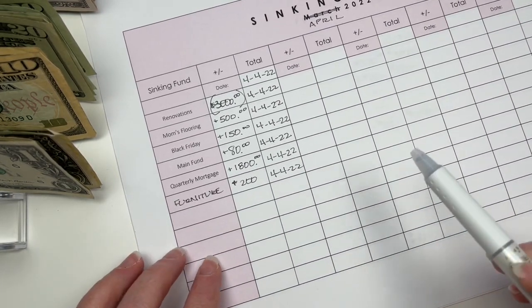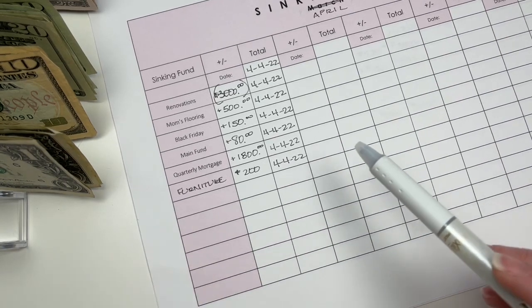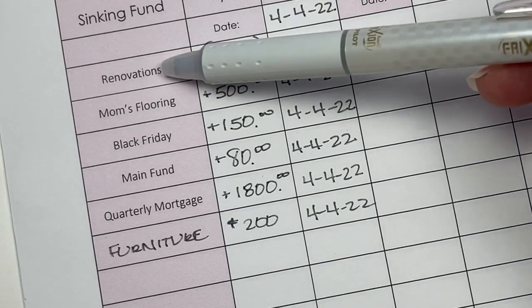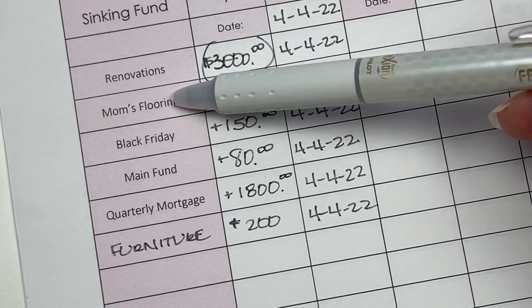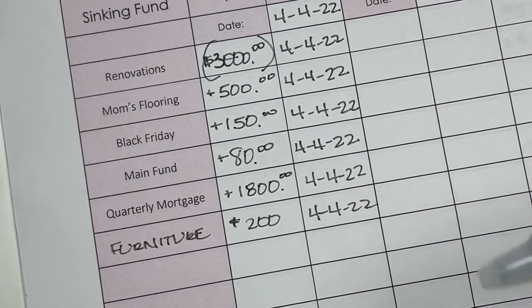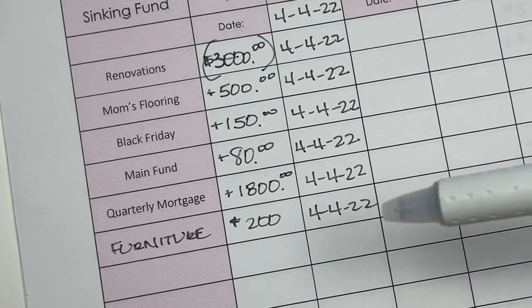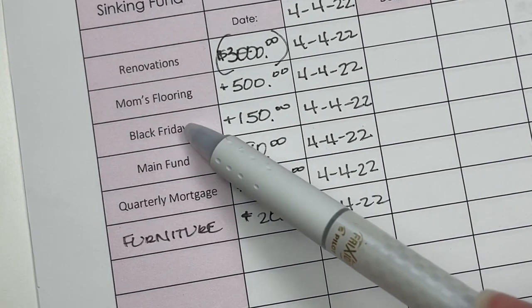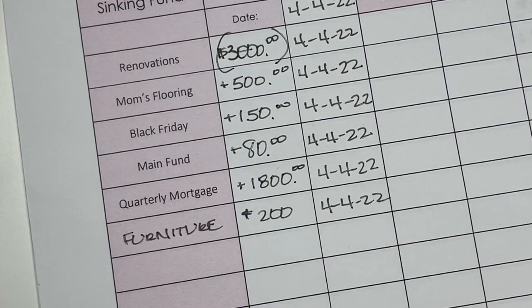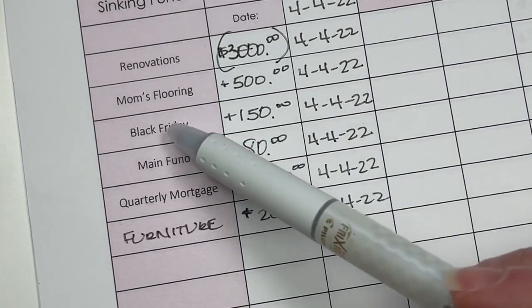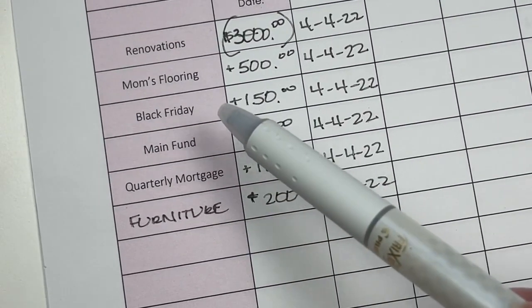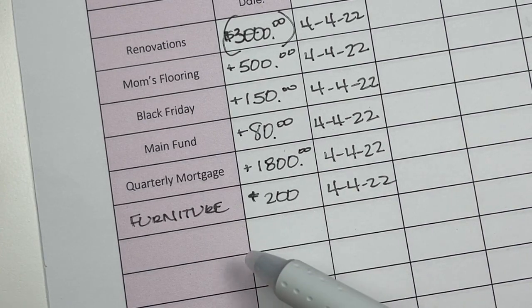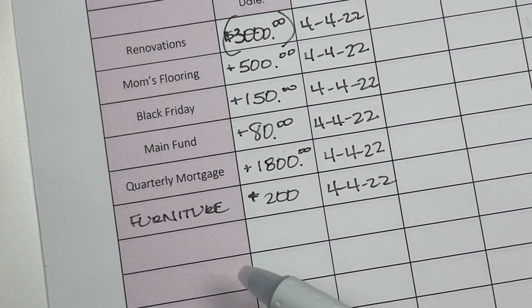This is my sinking fund printout that I did, and just zooming in a bit you can see my categories over here. I have renovations for our home, my mom's flooring, and if you need more explanation you can check out some previous videos of mine. This is a surprise gift for her. Black Friday slash Christmas gifts, holiday shopping, that's what this fund will cover or is going to cover. My main sinking fund, quarterly mortgage, and that is an extra principal payment.